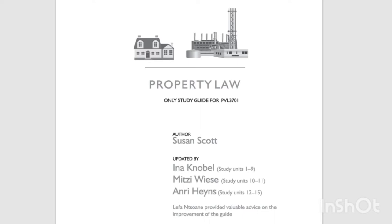A real relationship is the particular legal relationship between one or more legal subjects and a thing. Note furthermore that the concept 'real relationship' is broader than the concept 'real right', since real relationships include both real rights and certain unlawful real relationships. There are usually two sides to a lawful real relationship: first, the subject-object relationship between the legal subject and the particular thing; and secondly, the subject-subject relationship between the legal subject and all other legal subjects.